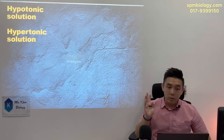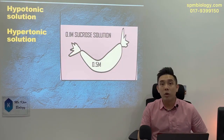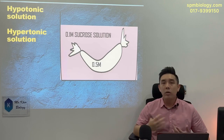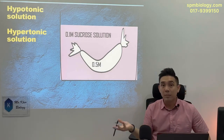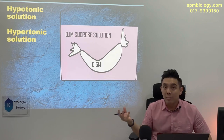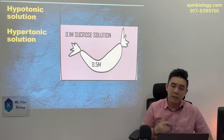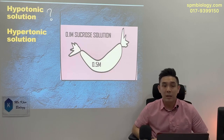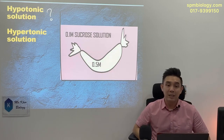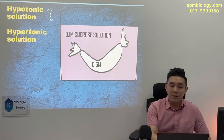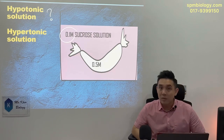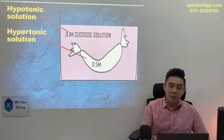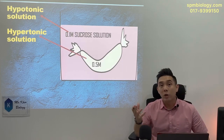Just to recap real quick — in an exam, they'll normally throw you two different concentrations of solution. All you have to do is determine which is the bigger number. For example, can anybody tell me which is a hypotonic solution? If your answer is 0.1, yes, you are right. So 0.1 is a hypotonic solution while 0.5 is a hypertonic solution.